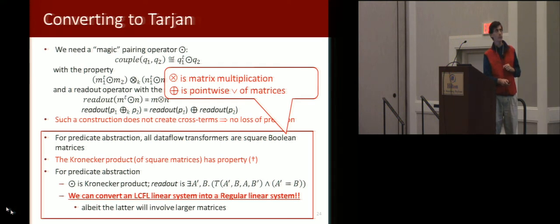For predicate abstraction, the data flow transformers are square Boolean matrices. The composition operation is matrix multiplication, and the join operation is pointwise or of the matrices.